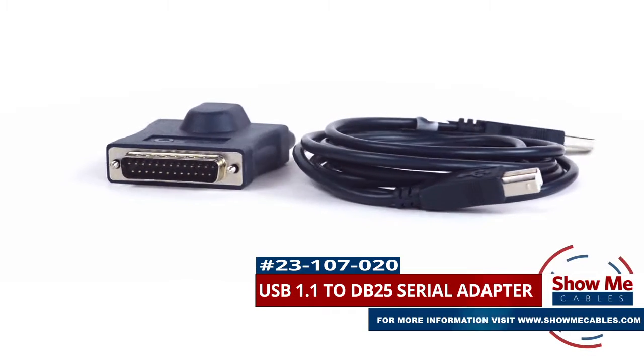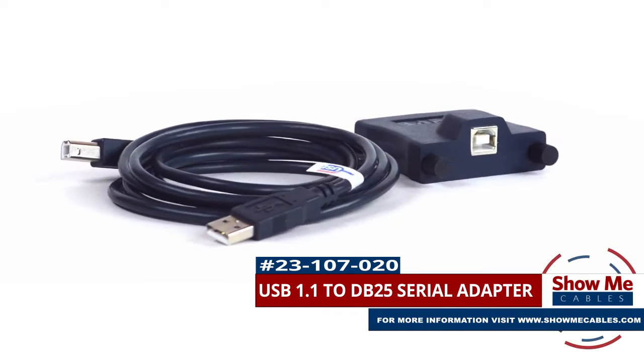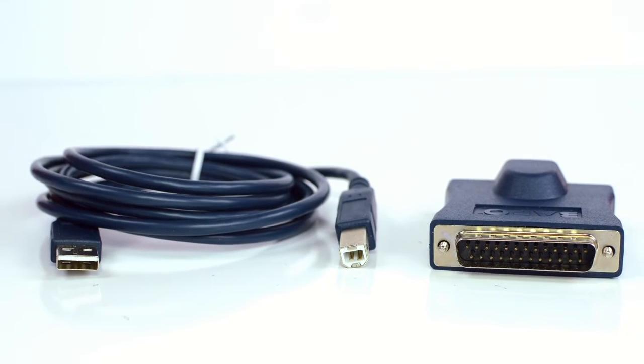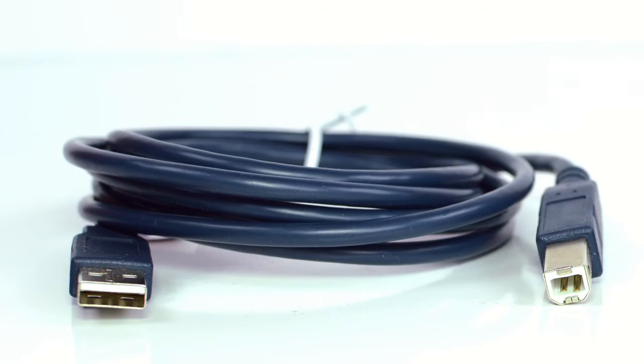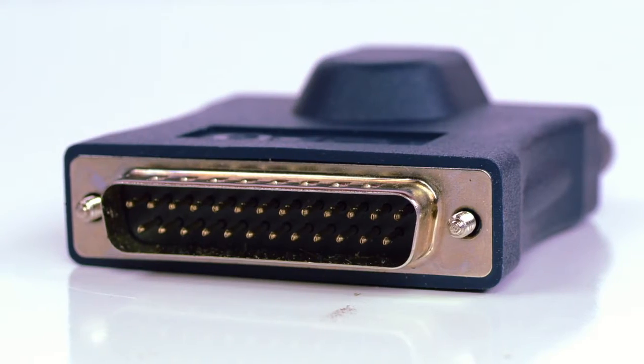This is the USB 1.1 to DB25 serial adapter. It is a two-piece adapter. The first is a USB A male to B male cable, and the second piece is a USB type B female to DB25 male adapter.